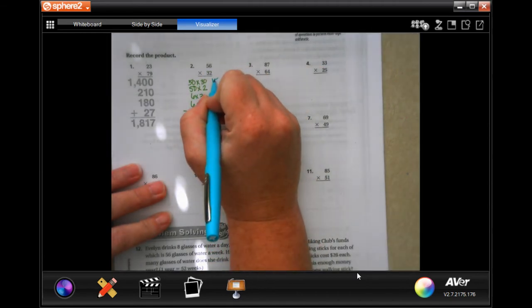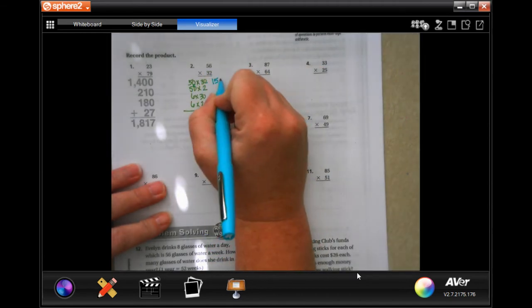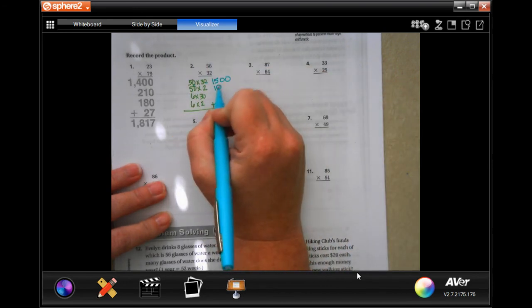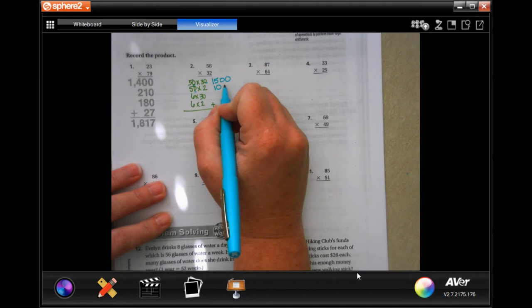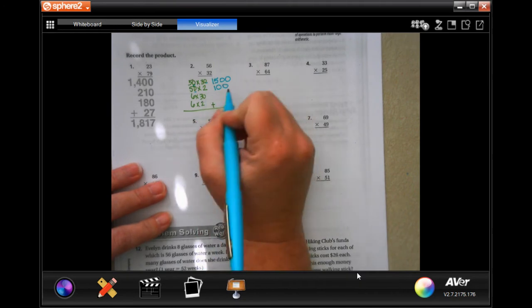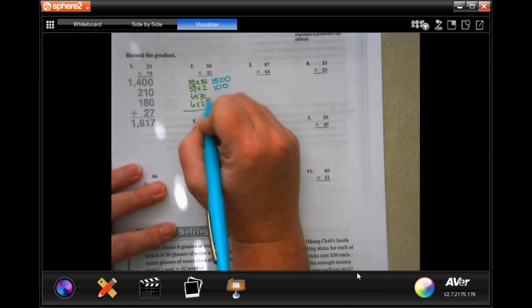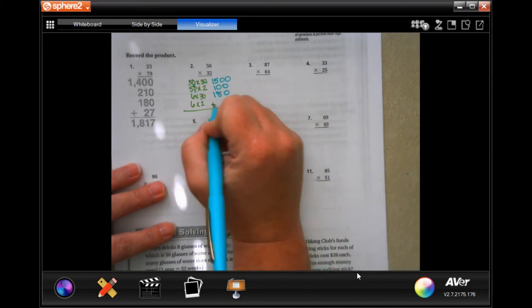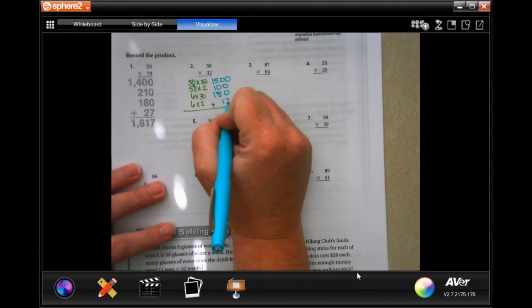So, 5 times 3 is 15. I'm going to add in those two zeros. 2 times 5 is 10. Don't let that 10 fool you. I still have to add that zero in. I did not line this up properly. 6 times 3 is 18. I'm going to add in a zero. And 6 times 2 is 12.